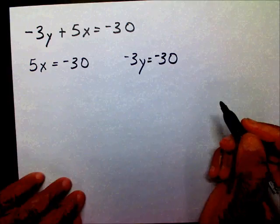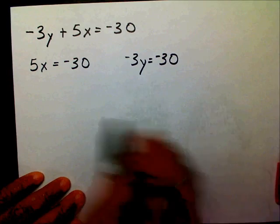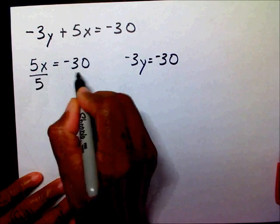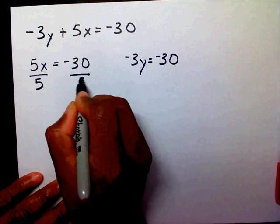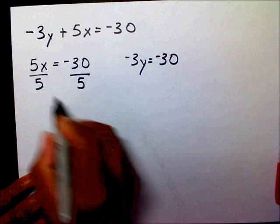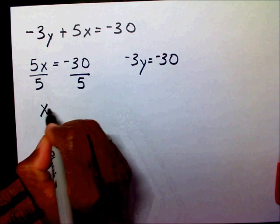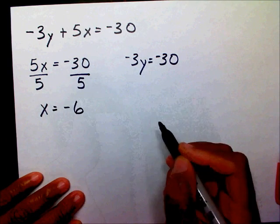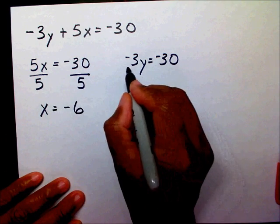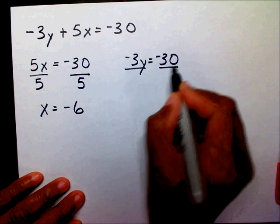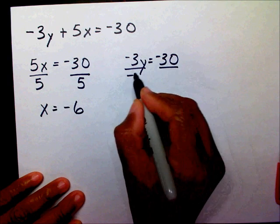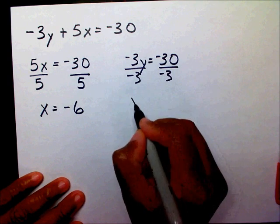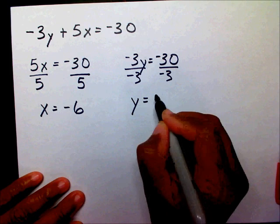Now I just need to solve both of my equations. So x equals negative 6. Then I'm going to solve for y — I'm going to divide both sides by negative 3 — so y equals 10.